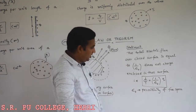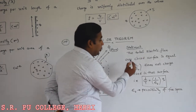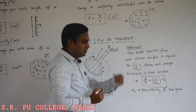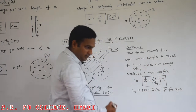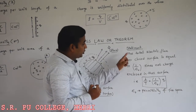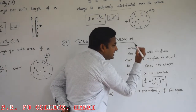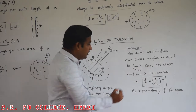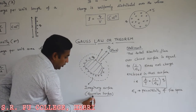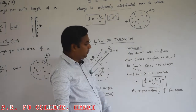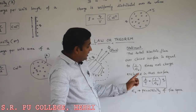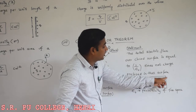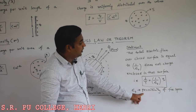According to Gauss law, the statement is: the total electric flux over a closed surface — that is the Gaussian surface — is equal to 1 by epsilon naught times the net charge enclosed in that surface. This is the statement for Gauss law or theorem, and mathematically we can write phi equals 1 by epsilon naught times Q.